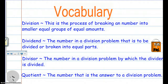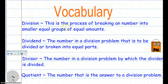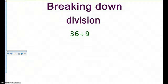Division is the process of breaking a number into smaller equal groups of equal amounts. Dividend is the number in a division problem that is to be divided or broken into equal parts. Divisor is the number in a division problem by which the dividend is divided. Quotient is the number that is the answer to a division problem. Pause the video so you can write down your vocabulary.